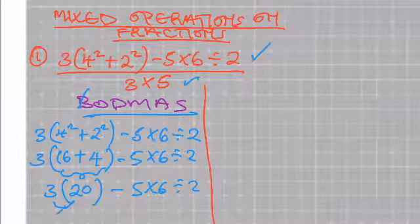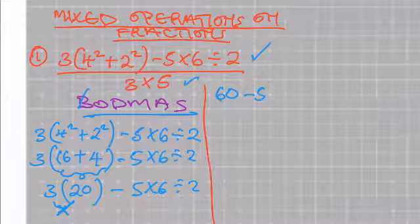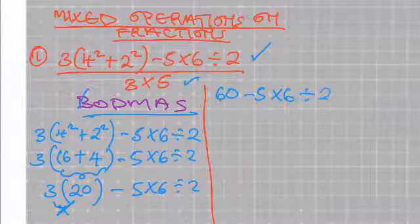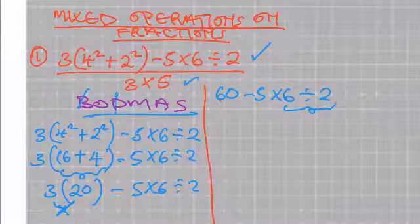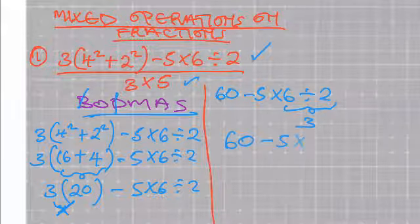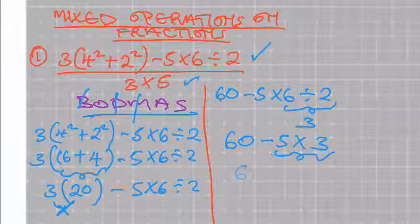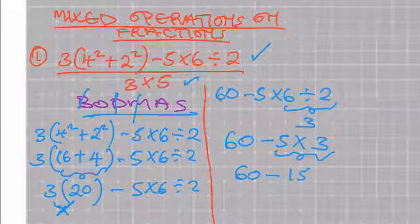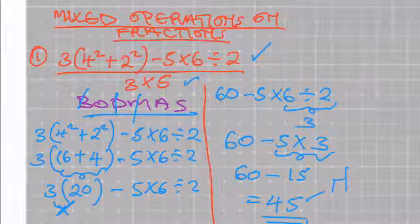20 by 3 — remember bracket means multiplication sign — so 20 by 3 is 60, minus 5 multiplied by 6 divided by 2. You come to division next: 6 divided by 2 gives you 3. That reduces our sum to 60 minus 5 multiplied by 3. Then you come to multiplication: 5 by 3 is 15, and 60 minus 15 gives you 45. So that is for the numerator.